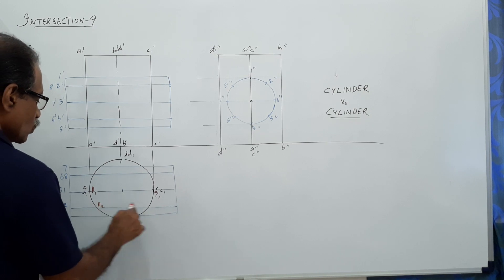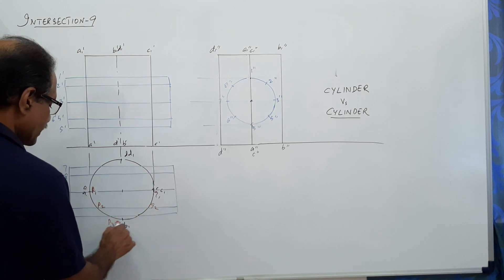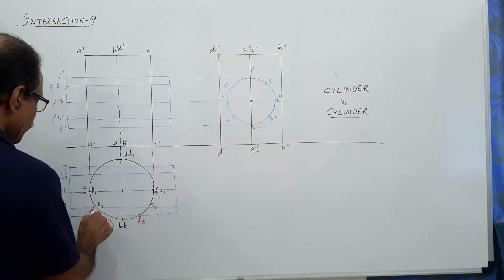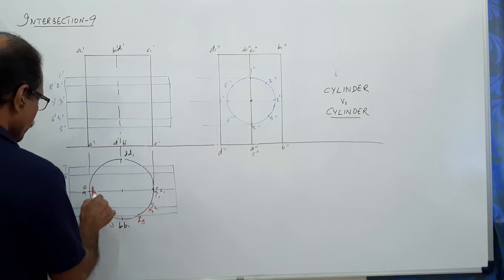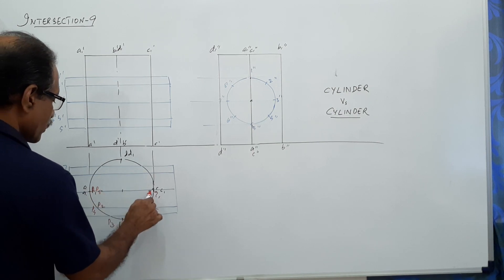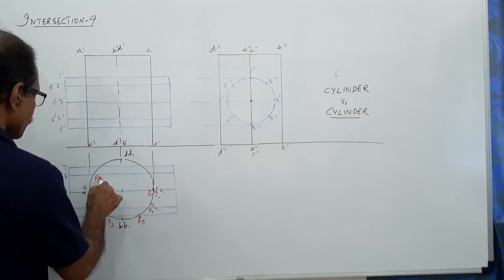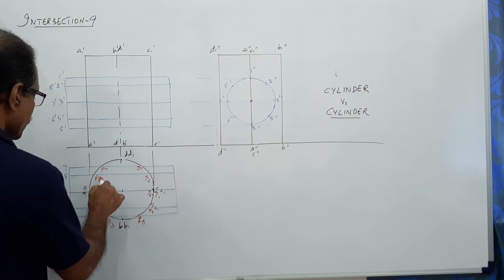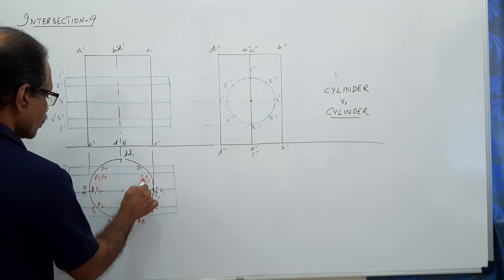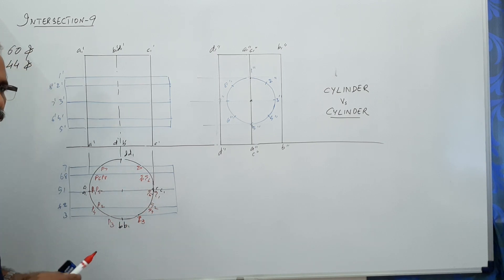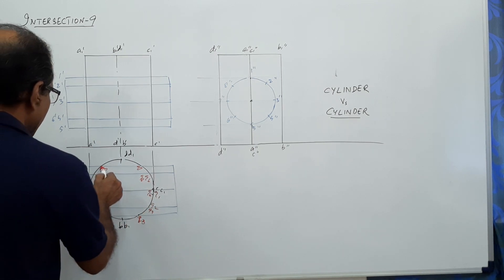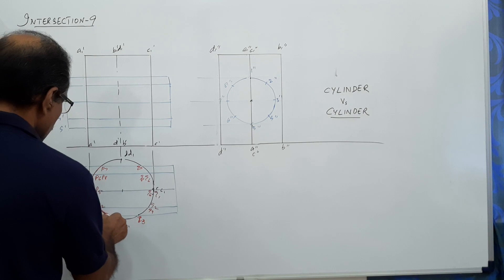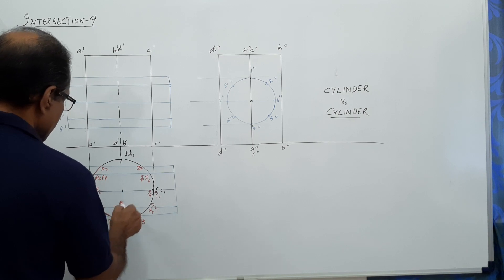Continuing: generator 2 gives p2 and q2, generator 3 gives p3 and q3, p4-q4, p5-q5, p6-q6, p7-q7, p8-q8. Project these — that is the intersection curve in the plan. The intersection curve in the plan is complete; connect them with a smooth curve. The intersection curve follows the circular arc itself.